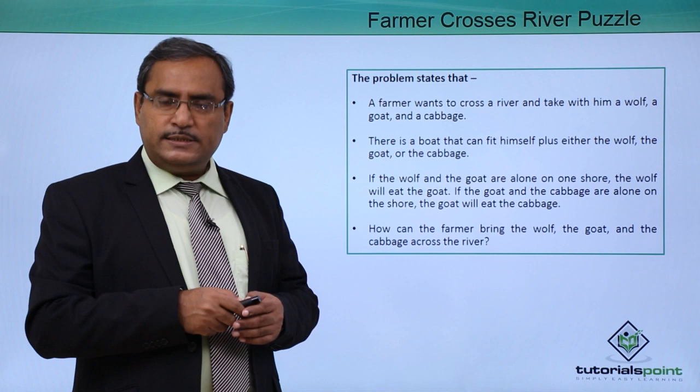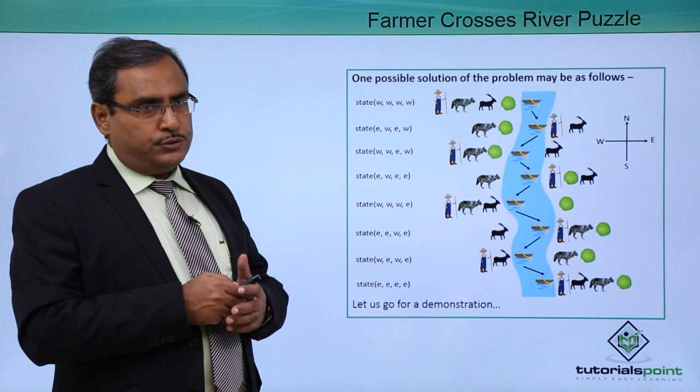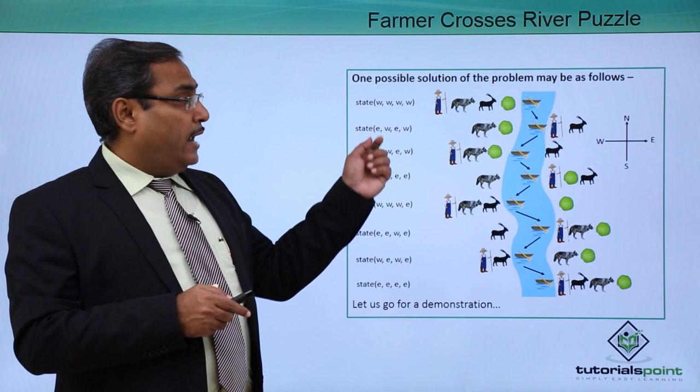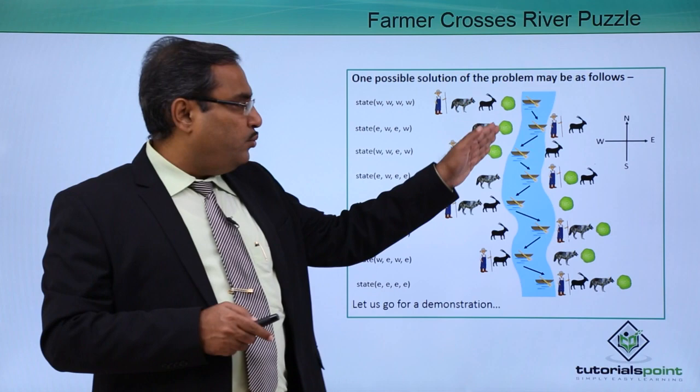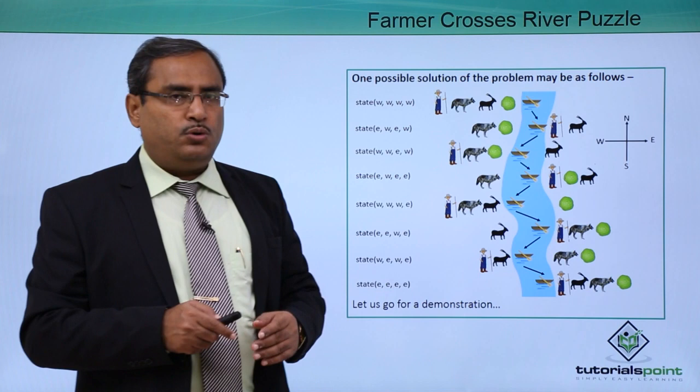Let us show a diagram to discuss one possible solution. We are representing the state using the notation WWWW, where each letter stands for West or East. This is our West Bank and this is our East Bank of the river.